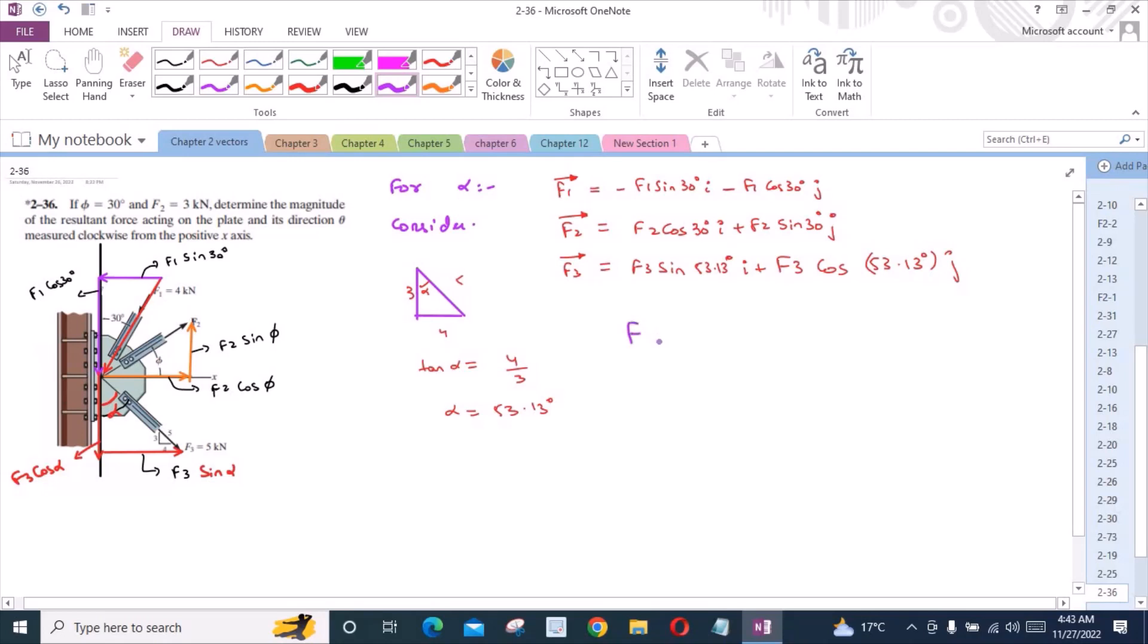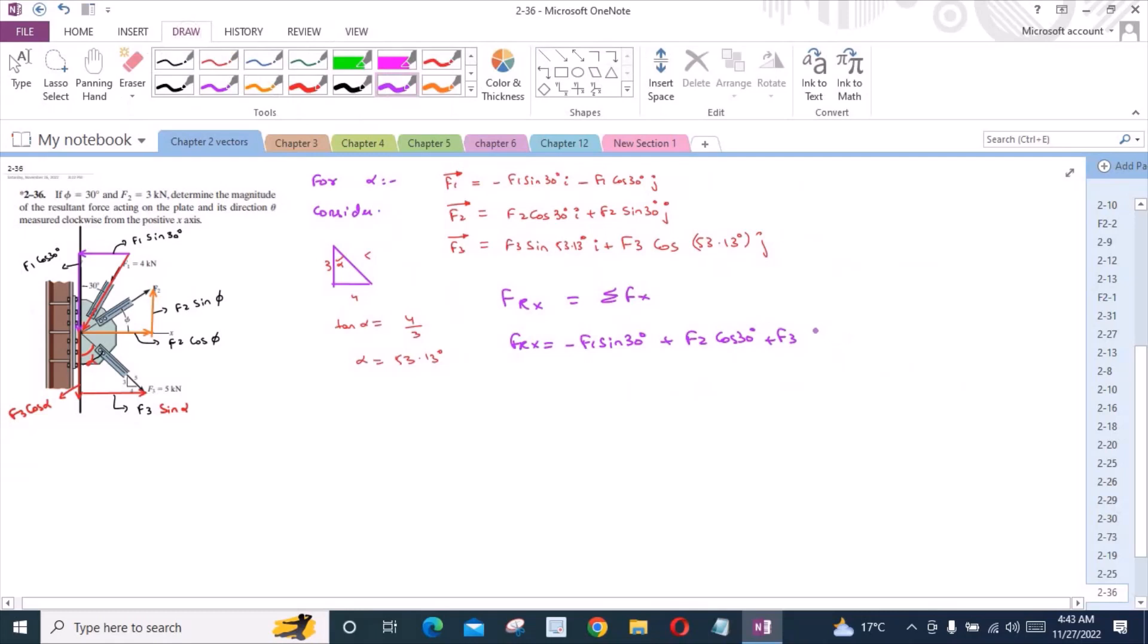The horizontal component of the resultant force is equal to the sum of the horizontal components of the individual forces. So we have FRx is equal to negative F1 sin 30 plus F2 cos 30 plus F3 sin 53.13 degrees.